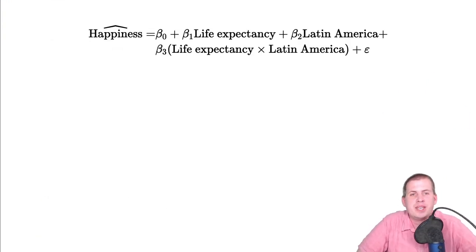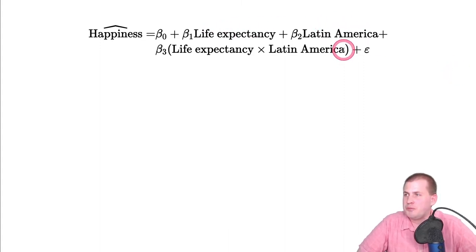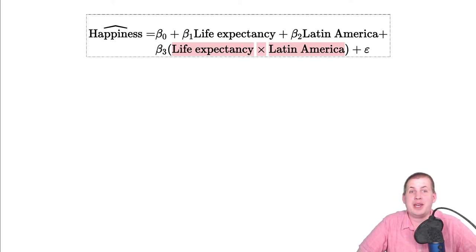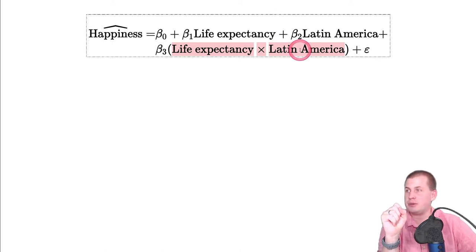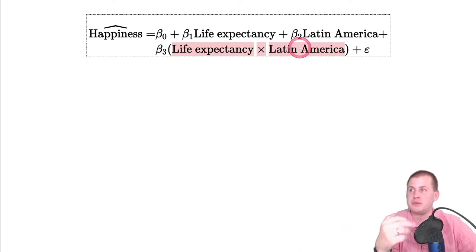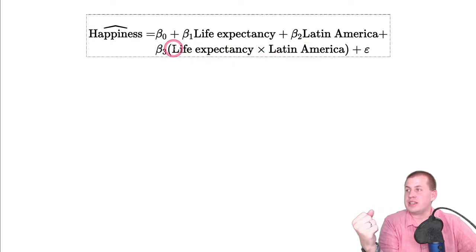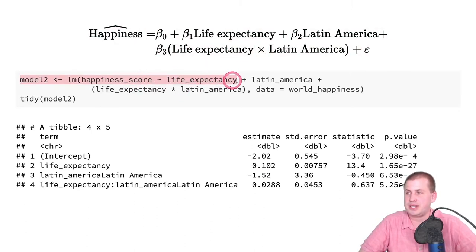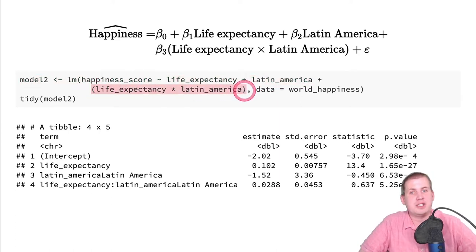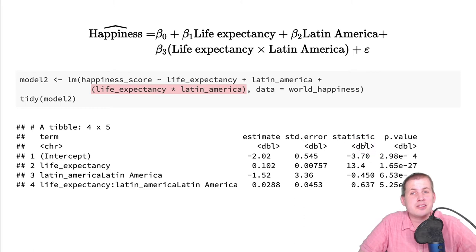Now we add a new term: life expectancy times Latin America — an interaction term. Mathematically, this creates a new column in the dataset: if a country is in Latin America it gets its actual life expectancy value; if not, it gets zero, because the Latin America variable is 1 for Latin America and 0 otherwise. So you only see that coefficient's effect for Latin American countries.